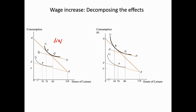Doing that gives us line DD, and the new tangential point is point Q. Due to the income effect, there is an increase in leisure hours from 70 to 85 hours — at point P we have 70 hours, but at point Q we have more leisure hours. This means the income effect causes the worker to spend fewer hours working.